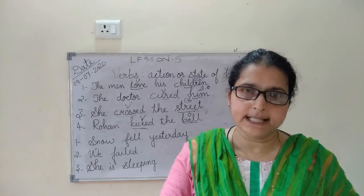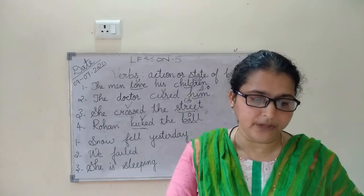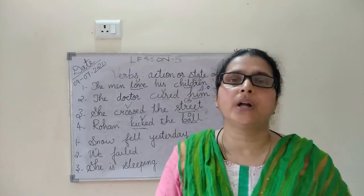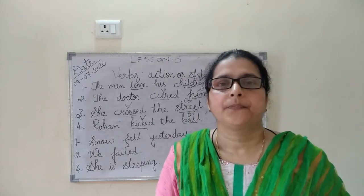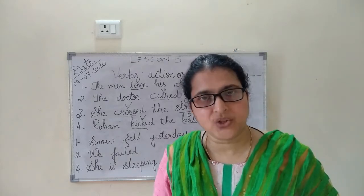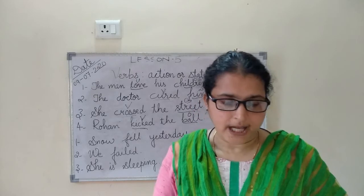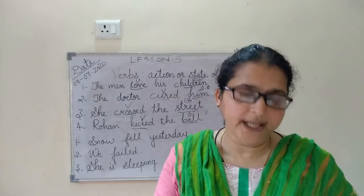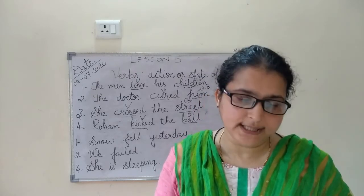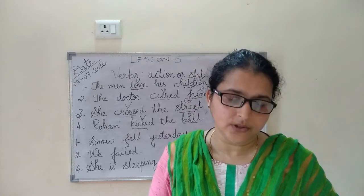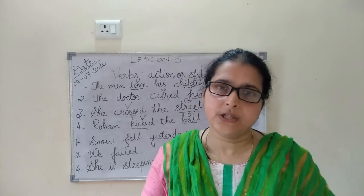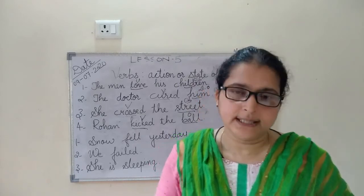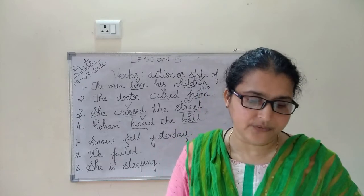The second example: Diksha loves flowers. Diksha is the subject. The verb is loves, and flowers is the direct object.